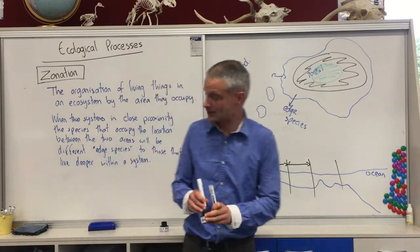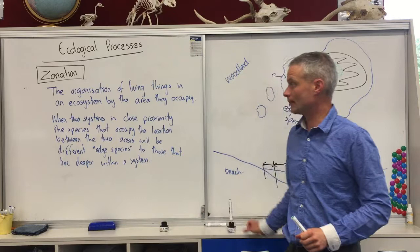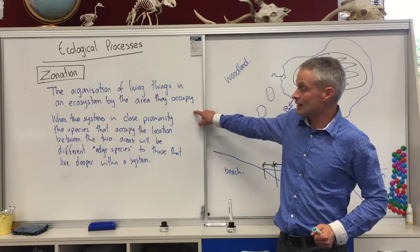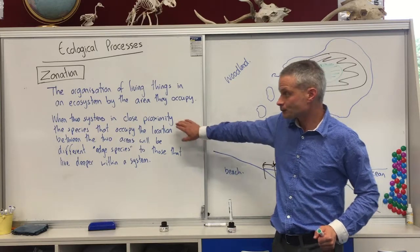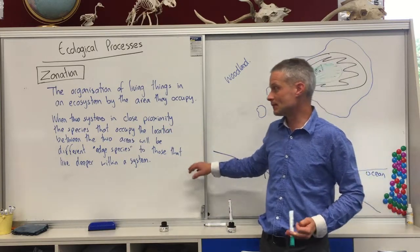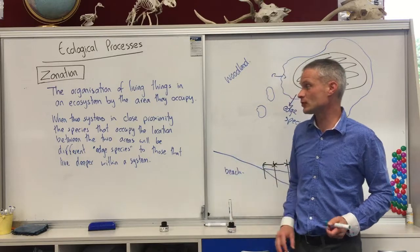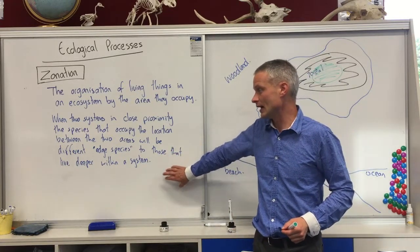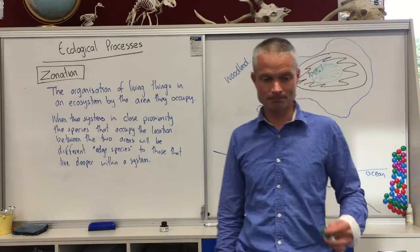So that's the first pattern — that's zonation. That's a way of organising living things within an ecosystem by the area they occupy. And when two systems are in close proximity, the species that occupy the location between the two areas will be the edge species, and they'll be different to the ones that are deeper within each system.